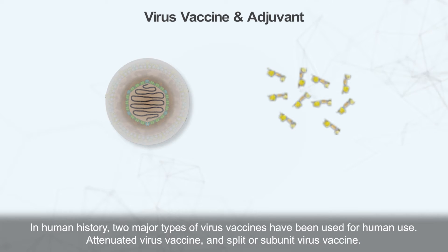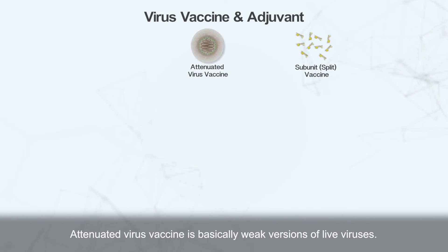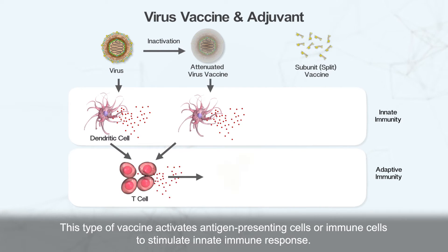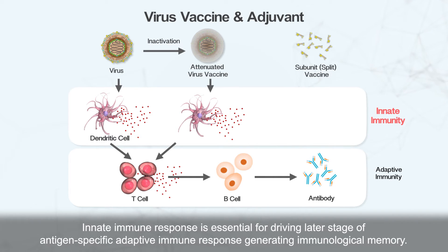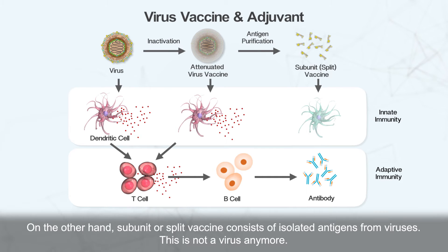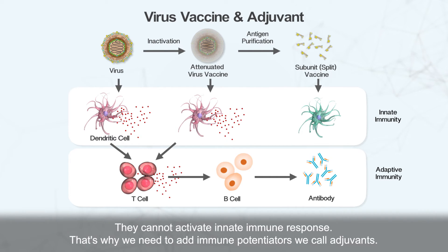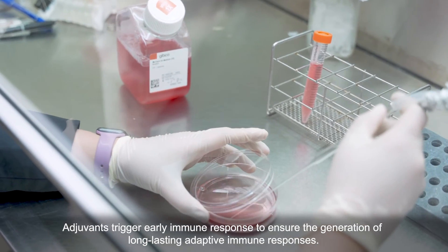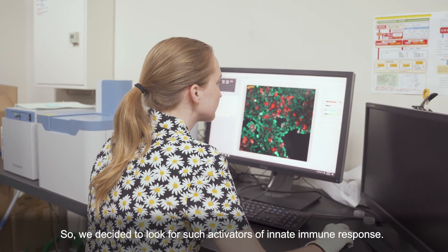In human history, two major types of virus vaccines have been used: attenuated virus vaccine, and split or subunit virus vaccine. Attenuated virus vaccine is basically a weak version of live vaccines. This type of vaccine activates antigen-presenting cells or immune cells to stimulate innate immune response. Innate immune response is essential for driving the later stage of antigen-specific adaptive immune response, generating immunological memory. On the other hand, subunit or split vaccines consist of isolated antigens from viruses. These are not live virus anymore — they cannot activate innate immune response. That's why we need to add immune potentiators we call adjuvants. Adjuvants trigger early immune response to ensure the generation of long-lasting adaptive immune responses. So we decided to look for such activators of innate immune response.